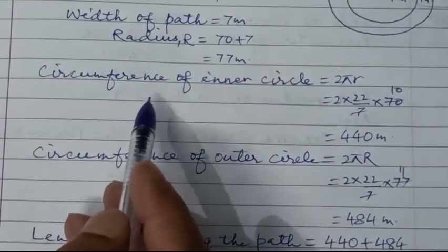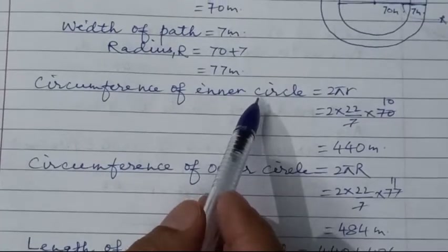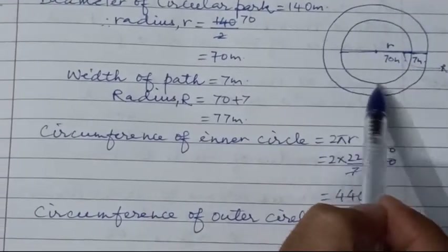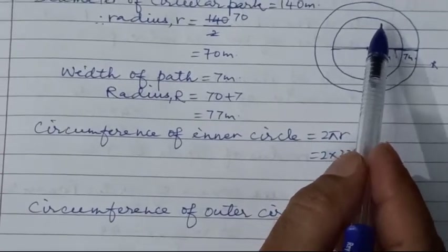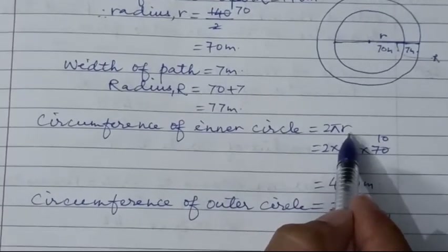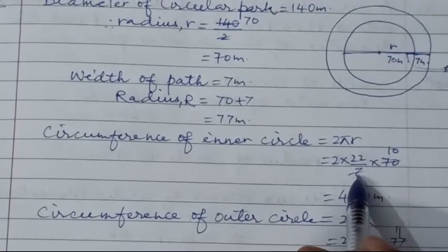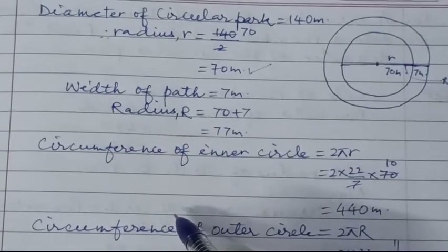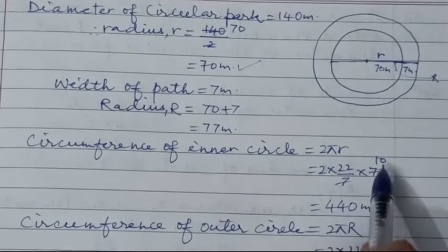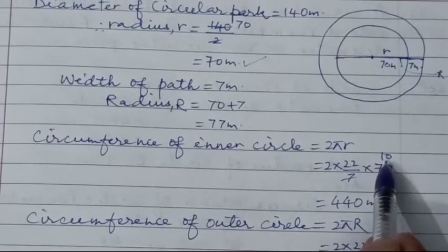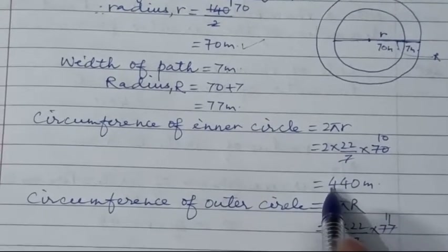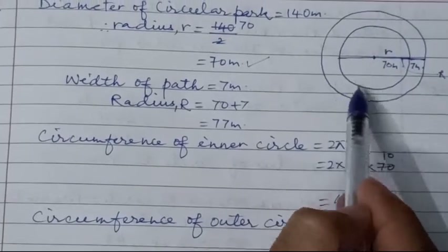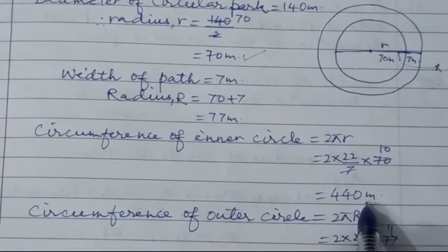Circumference of inner circle = 2πr = 2 × (22/7) × 70 = 440 meters. So the inner circumference is 440 meters.